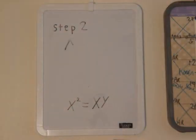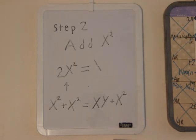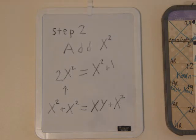Step 2: the next step is to add x squared to each side of our new equation. x squared plus x squared will give us 2x squared. The other side stays the same.